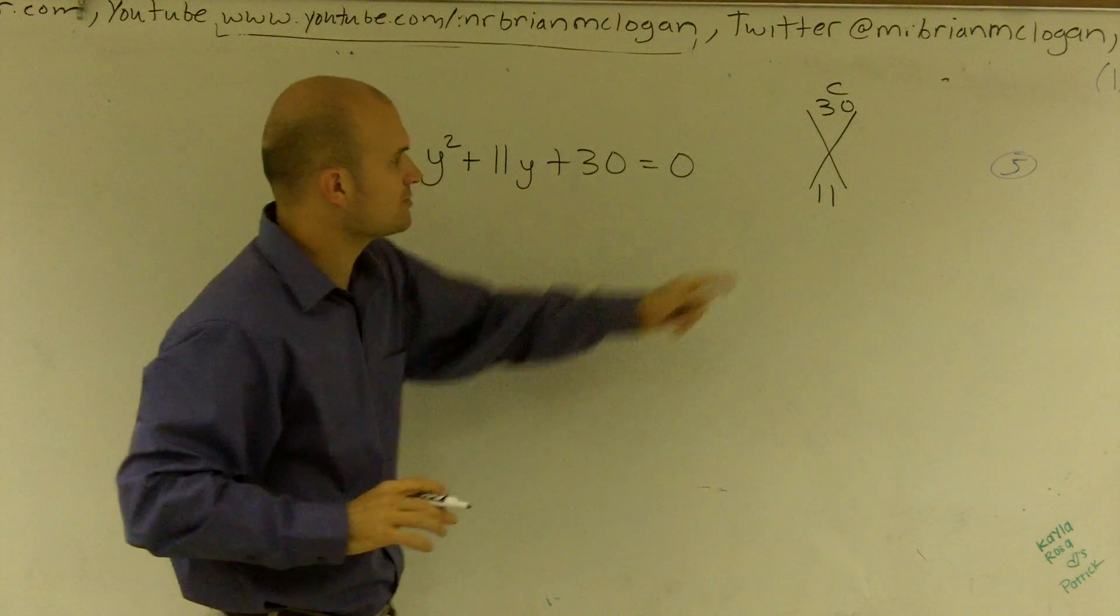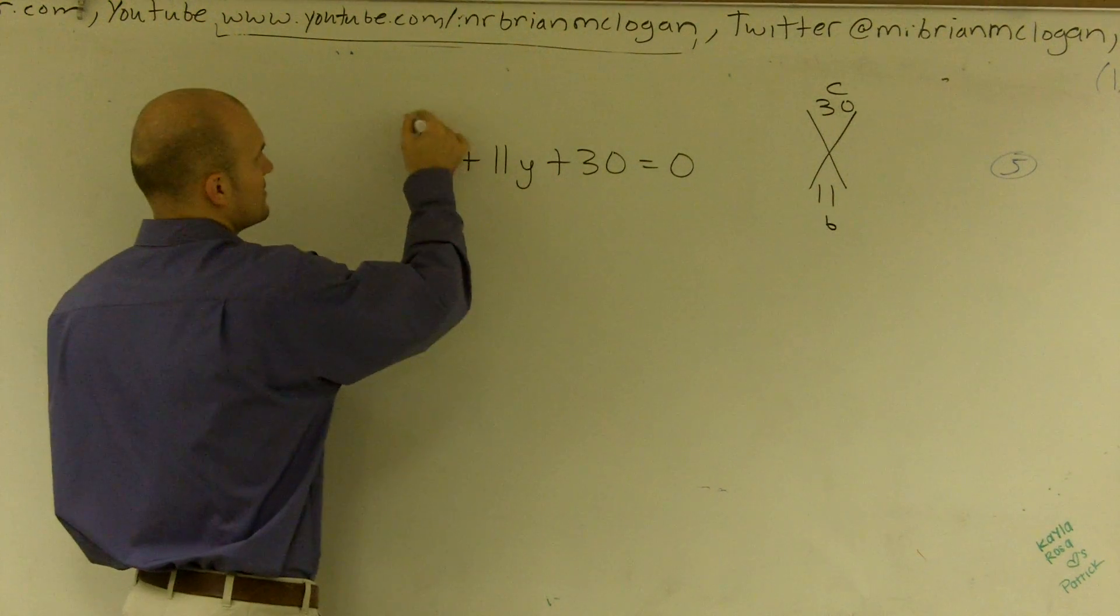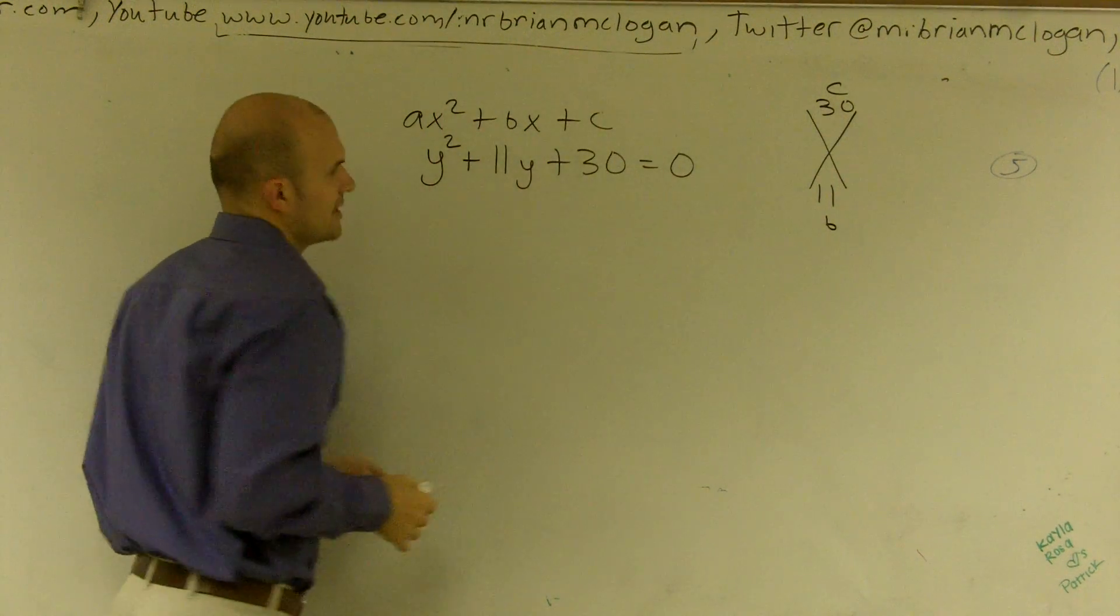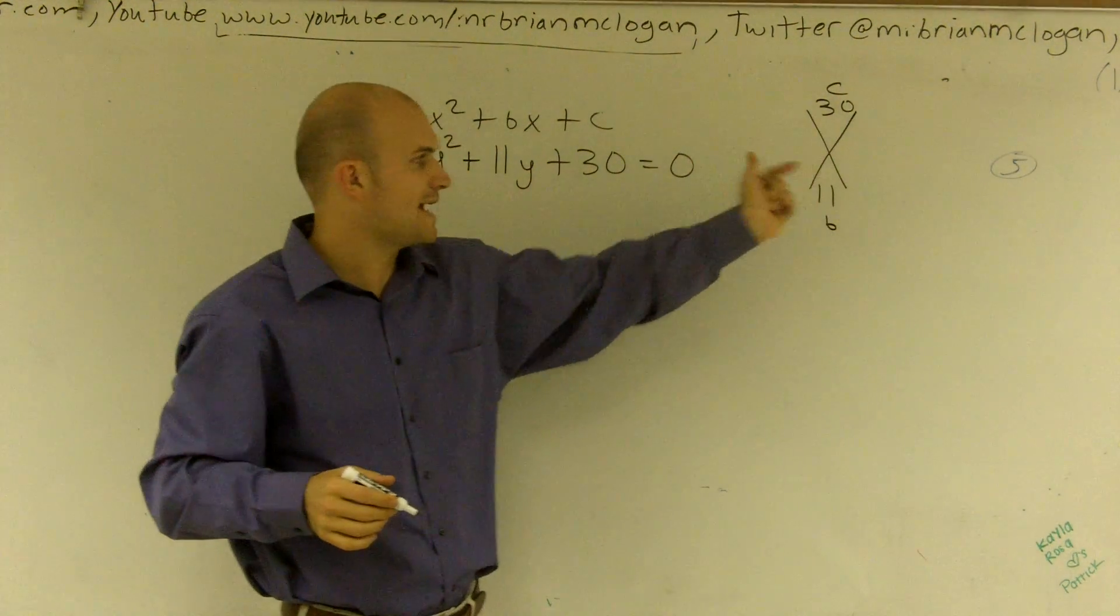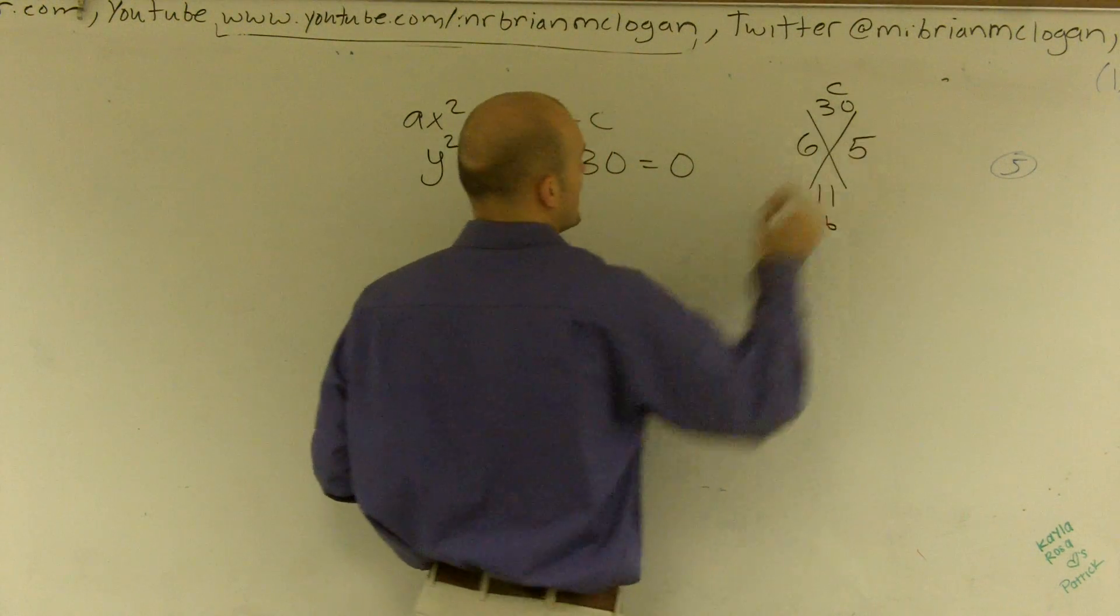And I say what two numbers multiply to give me 30? And the reason why I'm saying that, this is ax squared plus bx plus c. Okay, that's where I'm getting c is 30 and b is 11. So what two numbers multiply to give me 30 but add to give me 11? Well, those two numbers are going to be 6 and 5.